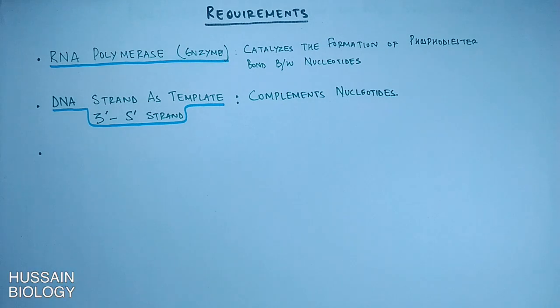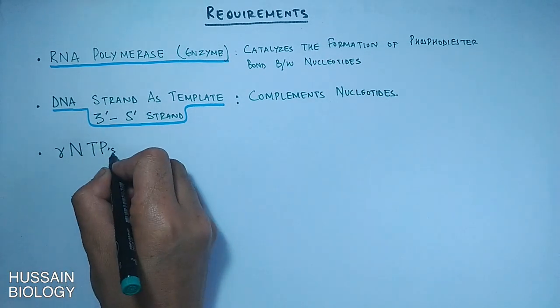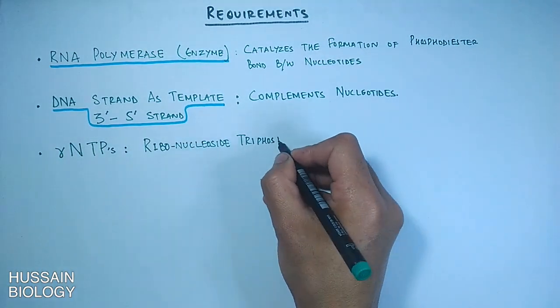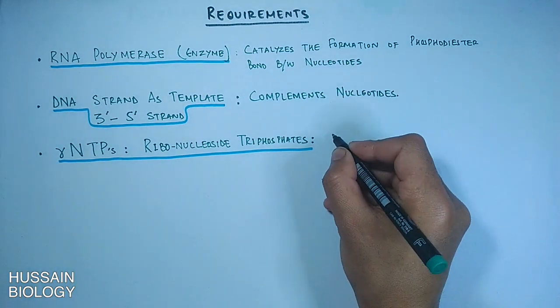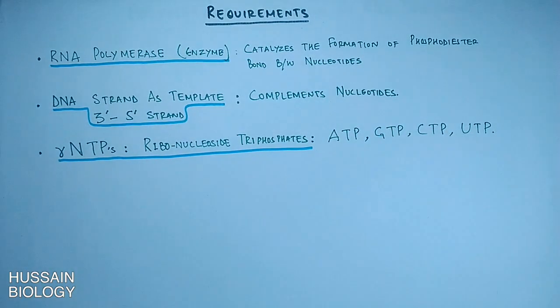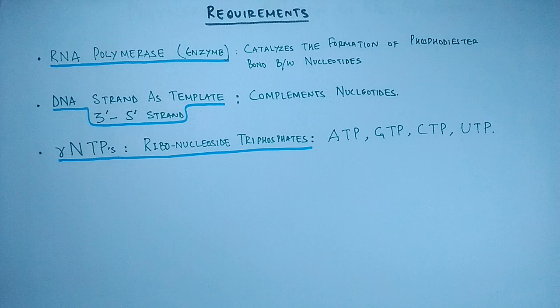Then we need RNTPs, ribonucleoside triphosphates, like ATP, GTP, CTP, and UTP—adenosine triphosphate, guanosine triphosphate, cytosine triphosphate, and uracil triphosphate. It must be noted that we have uracil triphosphate instead of thymine triphosphate as in DNA strand. So in RNA strand during transcription, uracil is incorporated in place of thymine.